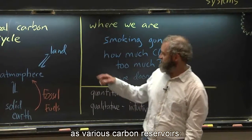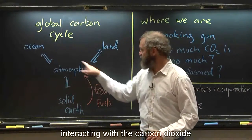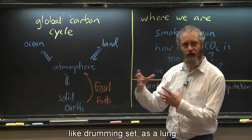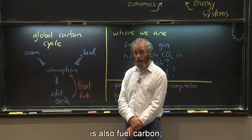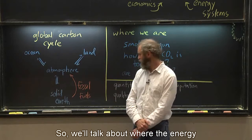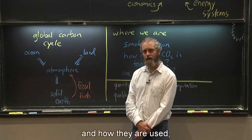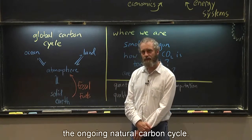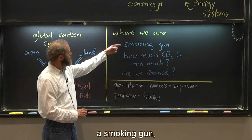Then we take a break from climate physics and talk about the carbon cycle. You can imagine various carbon reservoirs — the ocean, the land, and the solid Earth — interacting with the carbon dioxide in the atmosphere like three sets of lungs breathing with different rhythms. Superimposed on that, fossil fuel carbon is an added carbon flux from the solid Earth to the atmosphere. We'll talk about where the energy in fossil fuels comes from, what sorts of fossil fuels there are, how they are used, and how they will impact the ongoing natural carbon cycle.